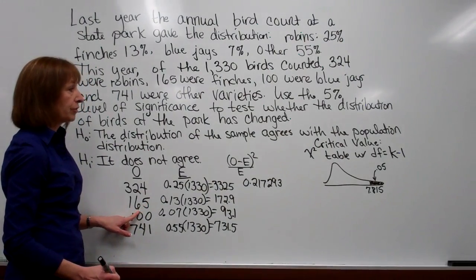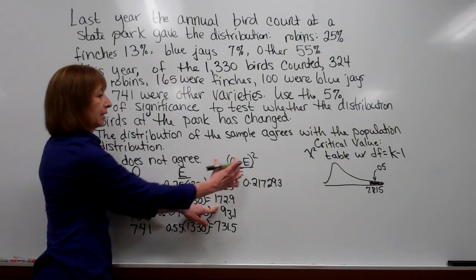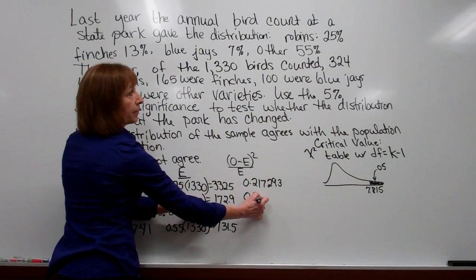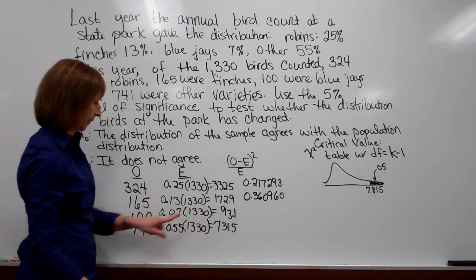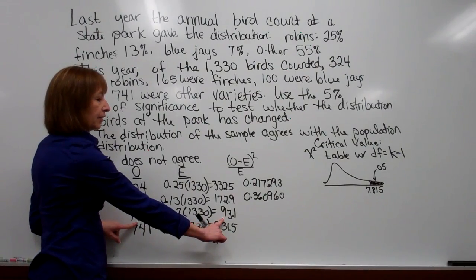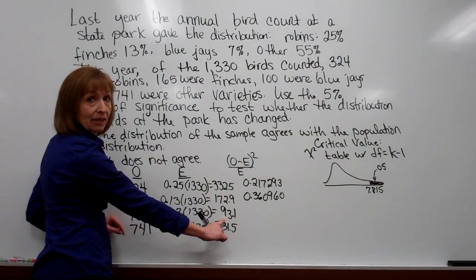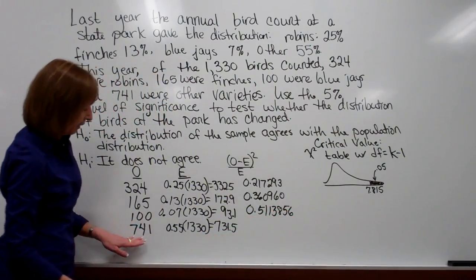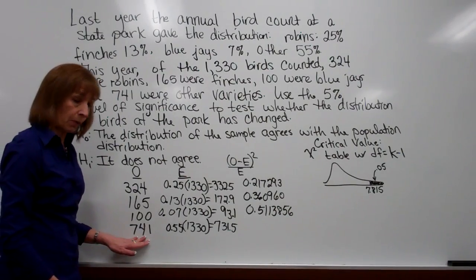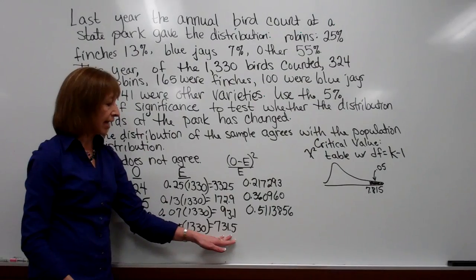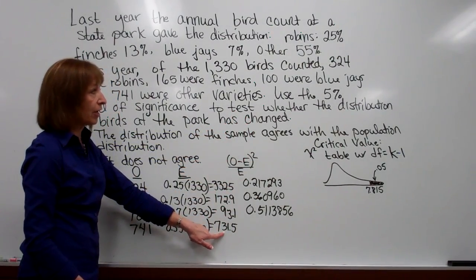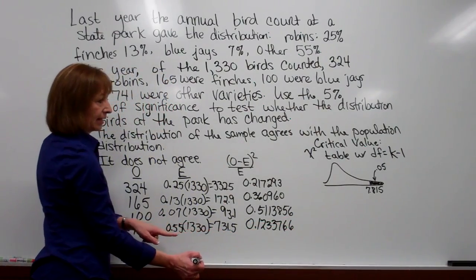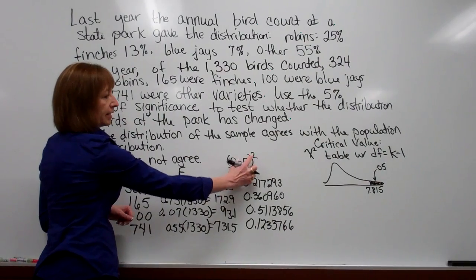When you take 165 minus the 172.9 quantity squared, divide by 172.9, you'll get 0.360960. When we take our 100 minus the 93.1 quantity squared and divide by 93.1, you'll get 0.5113856. And for the last category when we take our 741 subtract our 731.5 quantity squared and divide by 731.5, you get 0.1233766.